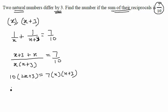Let us further simplify by cross multiplying the terms. You will get 10 into 2x plus 3 is equal to 7 into x into x plus 3. Let us open the brackets. We would get 20x plus 30 equal to 7x square plus 21x.